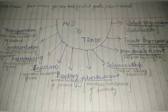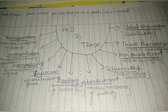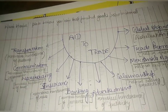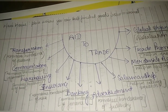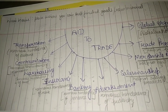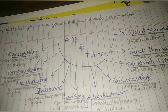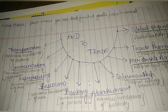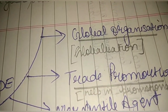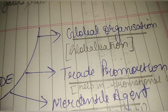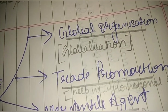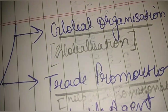Global organizations, which we have studied earlier, relate to globalization, which actually includes liberalization, privatization, and globalization. Global organizations include LPG — that is liberalization, privatization, and globalization.